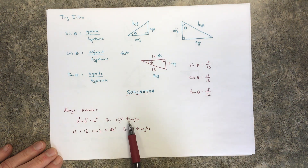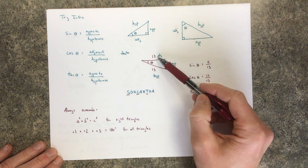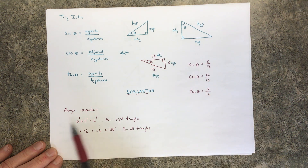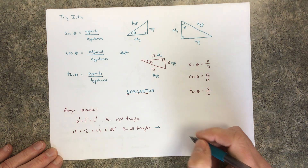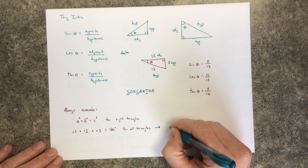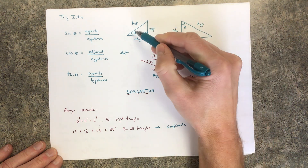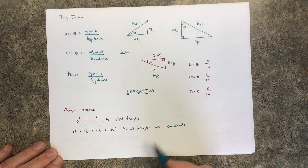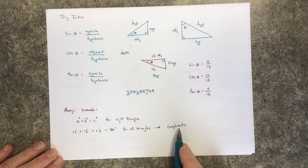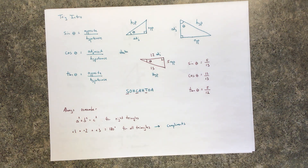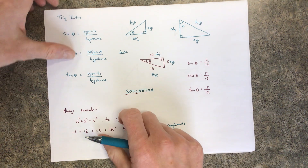Remember that for right triangles, a² + b² = c², so if you know two sides you can find the other using the Pythagorean theorem. Also, the three angles add up to 180, and since trig for right triangles means one angle is 90, the other two angles are complements — they add up to 90. We'll use a trig function — sine, cosine, or tangent — to find a missing side, and in the future we can use it to find a missing angle.